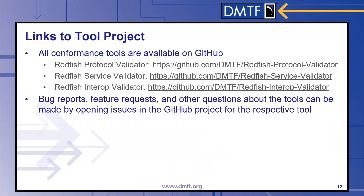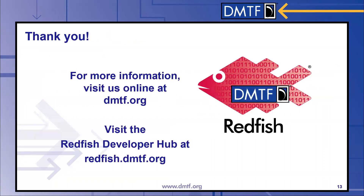All conformance tools are available on GitHub under the DMTF GitHub organization at github.com/DMTF with the project names Redfish Protocol Validator, Redfish Service Validator, and Redfish Interop Validator. If you find bugs, have an idea for a new feature, or have other questions about the tools, you can file an issue on the tool's respective GitHub page. Contributions are also welcome, so feel free to fork each of the projects and make pull requests back into the main project. Thank you for watching. More information can be found on DMTF.org, or you can also visit the Redfish Developer Hub at redfish.dmtf.org.